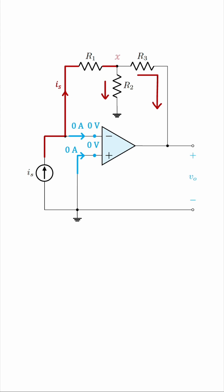Let's call this node X and write a node voltage equation there. We have IS entering the node, the current going through R2 is Vx over R2, the current going through R3 is Vx minus V0 over R3.